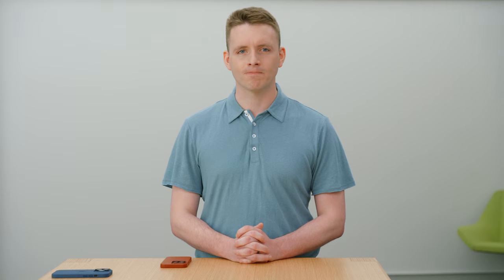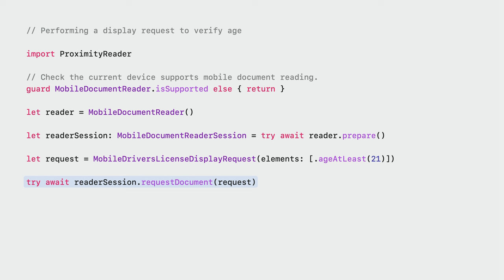Now let's have a look at how to implement this in code, starting with a display request. First, use the isSupportedClass property on MobileDocumentReader to check whether the current device supports this API. If it does, instantiate a reader object and call its prepare method — this will return a MobileDocumentReaderSession object. Next, create a driver's license display request with the elements you want to verify. Here, I'm verifying whether the holder is at least 21 years old. Then, call requestDocument on the session, passing in the request. The reader UI will then be shown, first prompting the ID holder to present their device, and then displaying the result. Keep in mind, as this is a display request, nothing is returned from the requestDocument method. With just a few lines of code, you've added mobile document reading capability to your app.